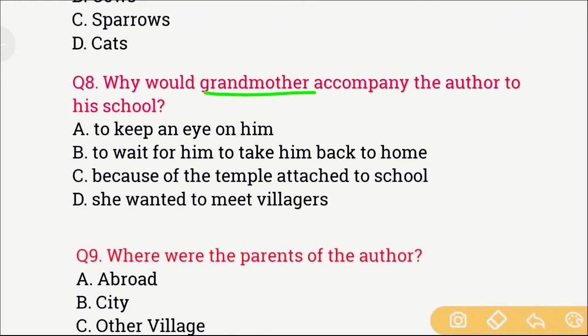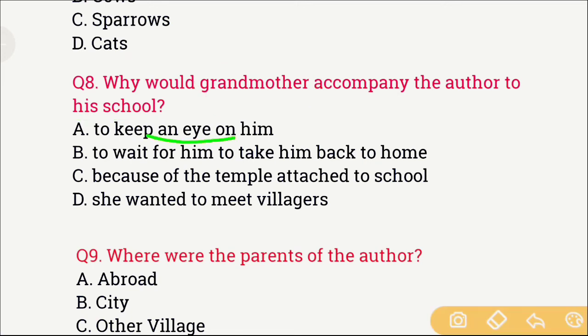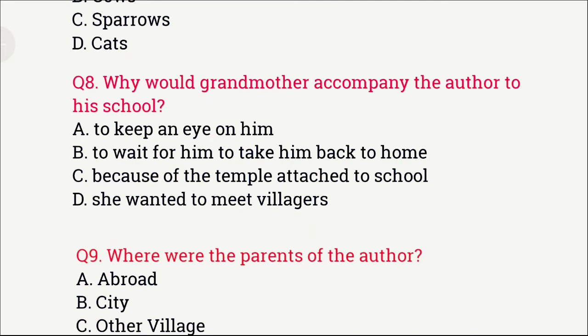Question number 8: Why would grandmother accompany the author to his school? The options are: A) To keep an eye on him, B) To wait for him and take him back home, C) Because of the temple attached to the school, and D) Because she wanted to meet villagers. The right answer is option C — because of the temple attached to the school. The author would study in school while grandmother would go to the temple.